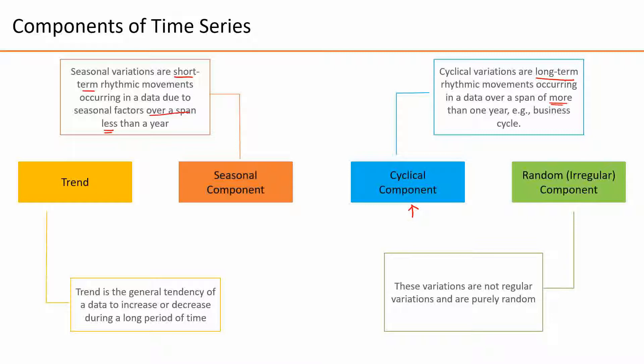The components — trend, seasonal component, and cyclical component — are also known as the deterministic part of a time series, while the irregular component is known as the non-deterministic part of a time series.